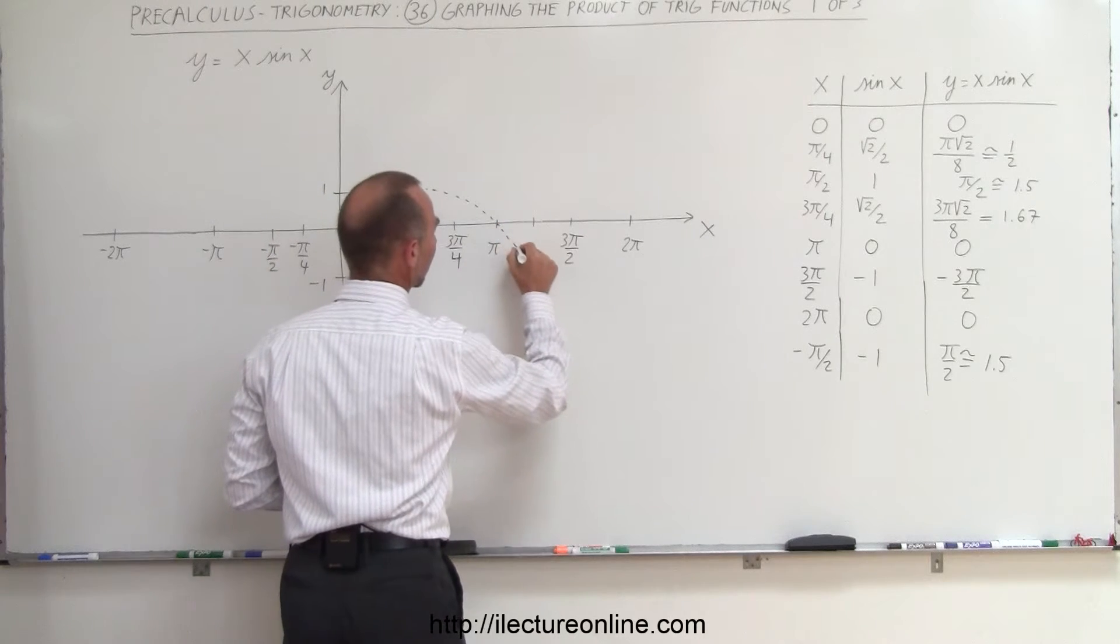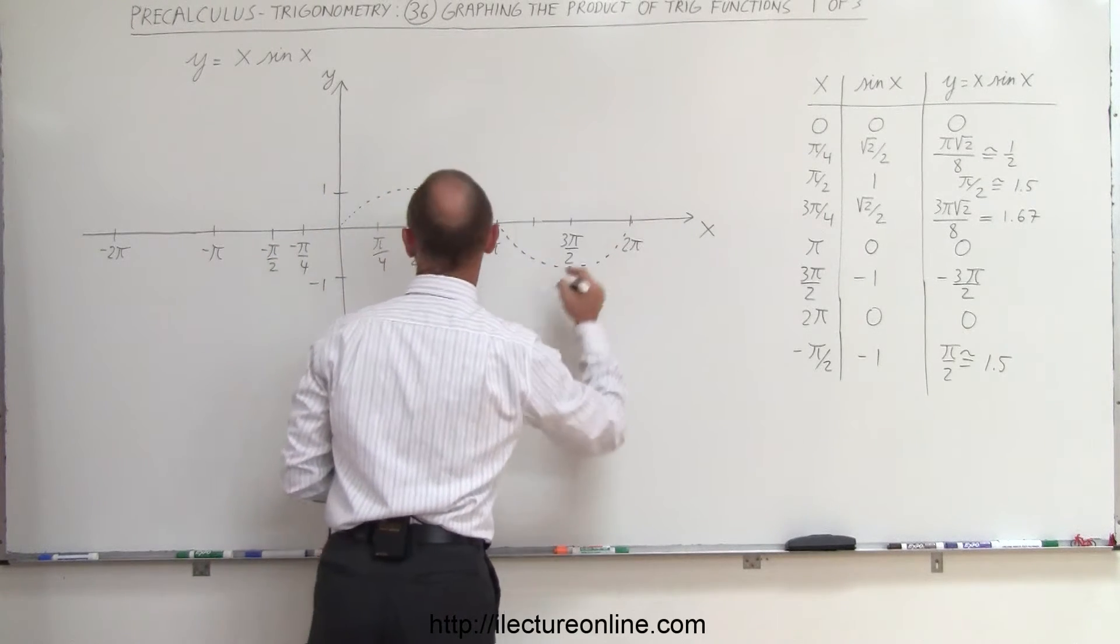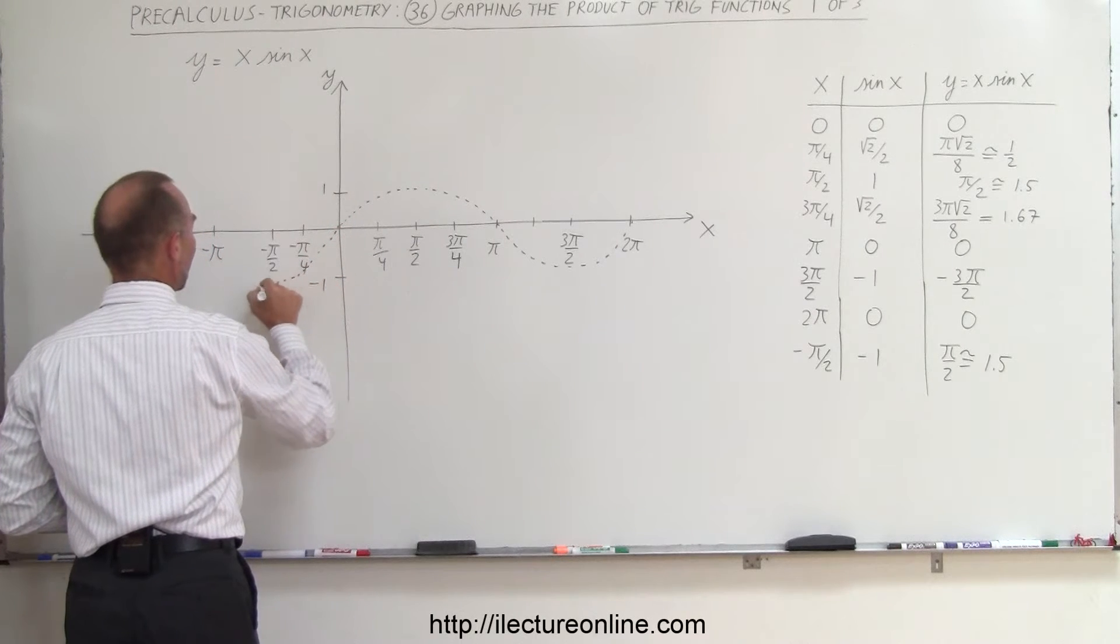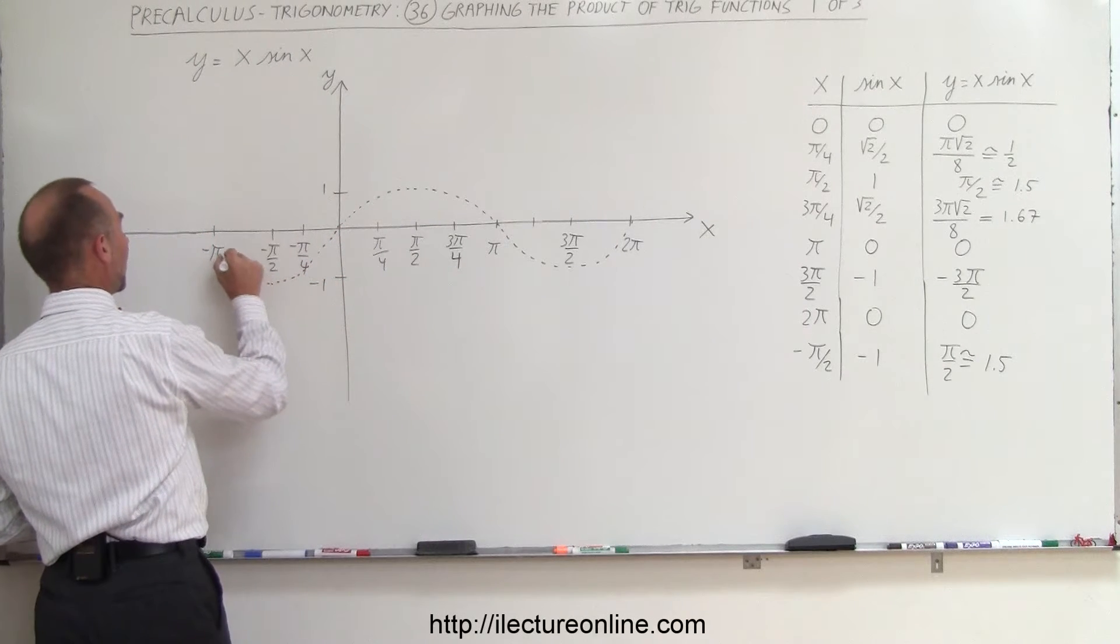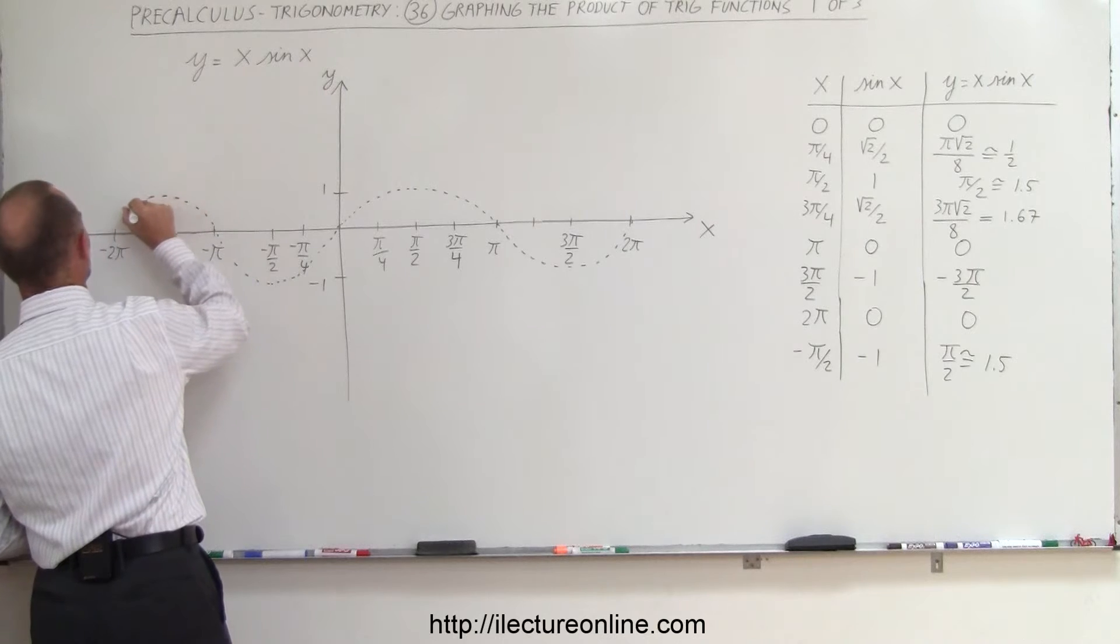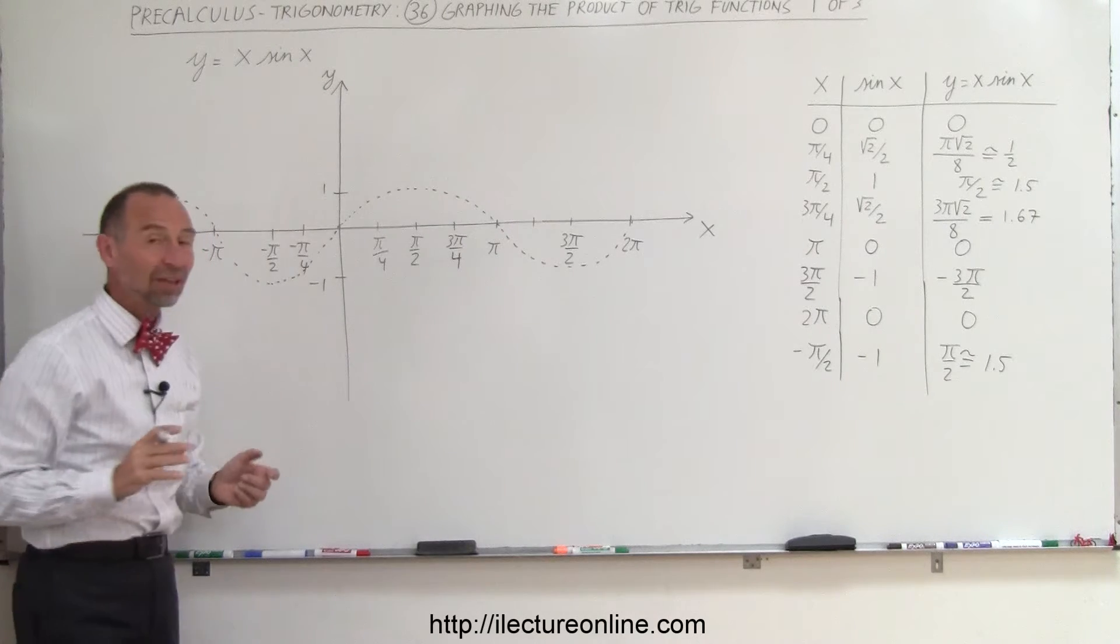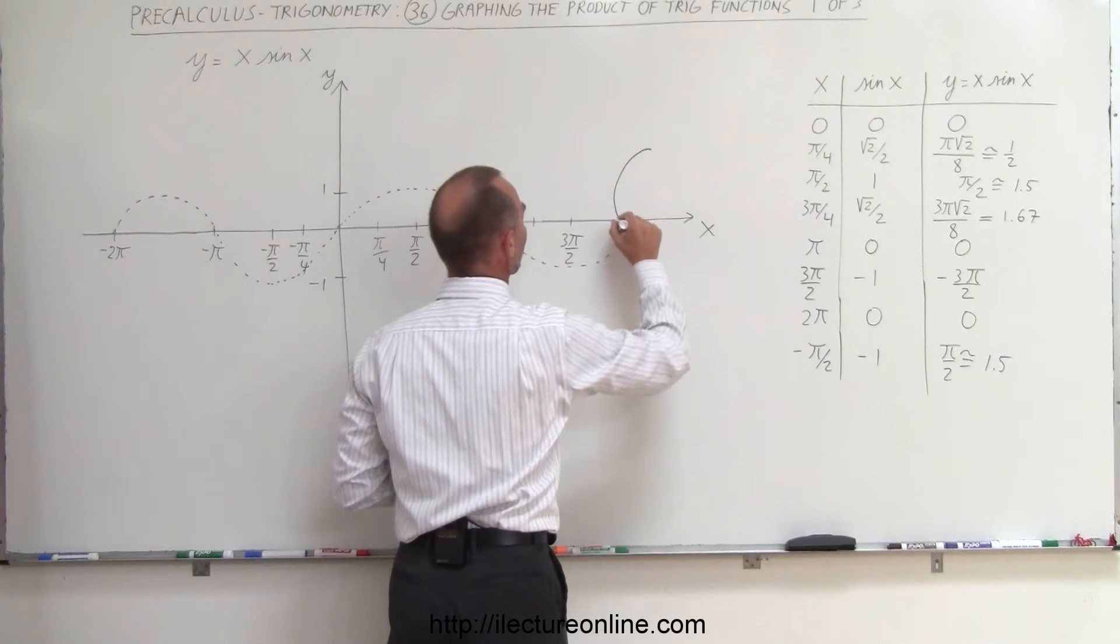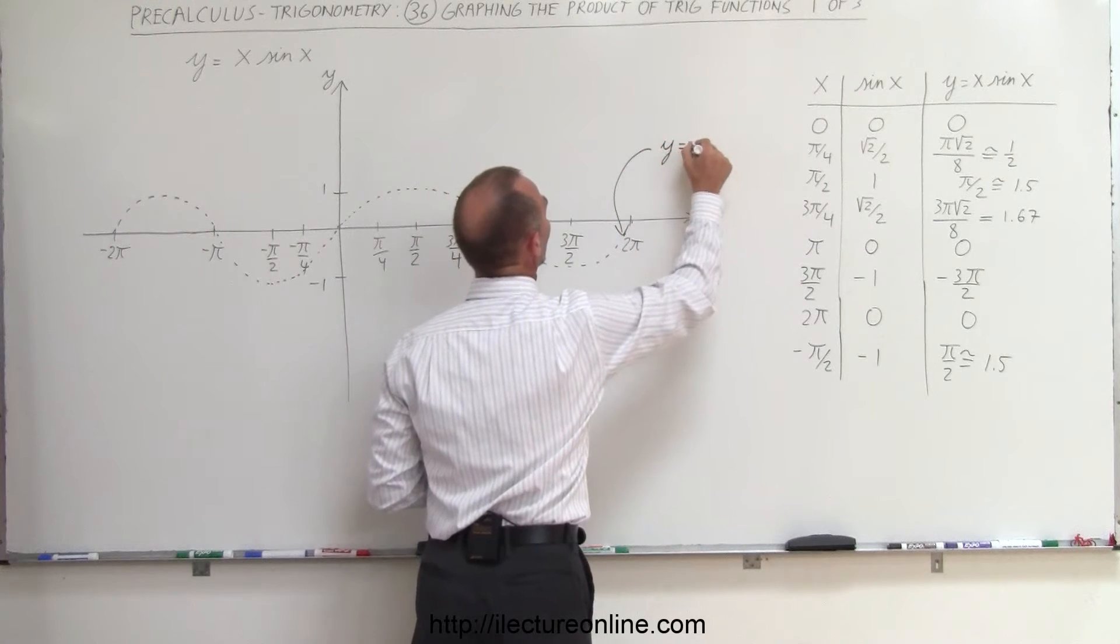And then we come down here and like that. On the other side, same thing. Come down here, we reach the maximum value in the negative sense, back to 0, and then here back to 0 like that. Okay, so that's what y equals the sine of x looks like.